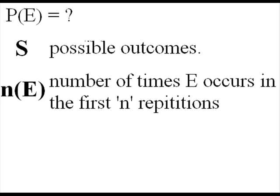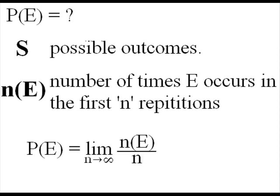And n(E) here is the number of times E occurs in the first n repetitions of the experiment. It follows then that you can take the probability of E to be the number of times this event occurs over the number of times you've done the experiment. And if you go off to infinity, this will converge to one value. And that's the probability it will happen. And this is called the relative frequency definition of probability.